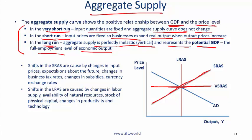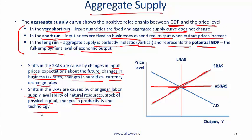Shifts in short run aggregate supply are caused by changes in input prices, expectations about the future, changes in business tax rates, changes in subsidies, or changes in exchange rates. Shifts in long run aggregate supply are caused by changes in labor supply, availability of natural resources, stock of physical capital — if physical capital increases, productivity and potential GDP increase — and changes in productivity and technology. If a country becomes more productive through better technology, that also impacts long run aggregate supply.